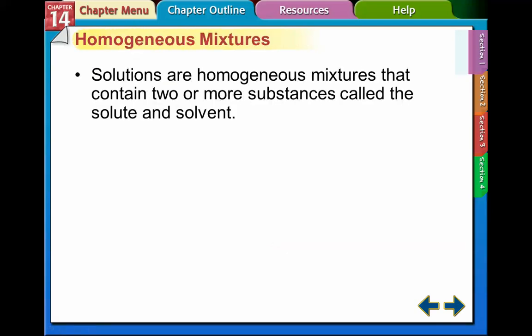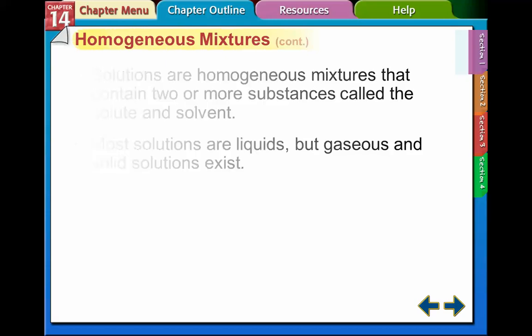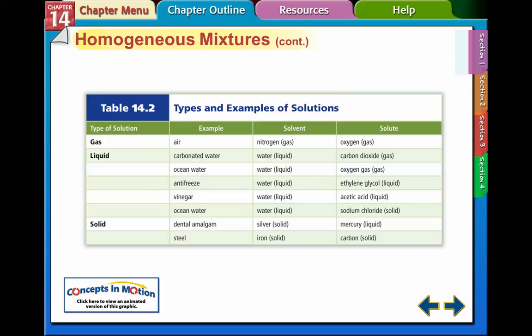Solutions are homogeneous mixtures. In chemistry, when we talk about a solution, we mean a homogeneous mixture. It contains two or more substances: the solute and the solvent. The solute is the thing dissolved in the solvent — like sugar in coffee or tea, where the solvent is water. Most solutions are liquids, but gas and solid solutions also exist. Air is a gas solution — about 80% nitrogen and 20% oxygen, where nitrogen is the solvent and oxygen is the solute, since nitrogen is more abundant.